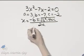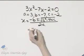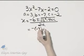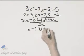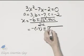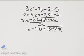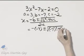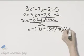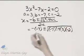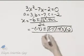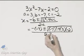And now we plug in the numbers. That's the opposite of B, which is negative 7, plus or minus the square root of negative 7 squared minus 4 times A is 3 and C is negative 2. And don't forget this is all over 2 times A is 3.